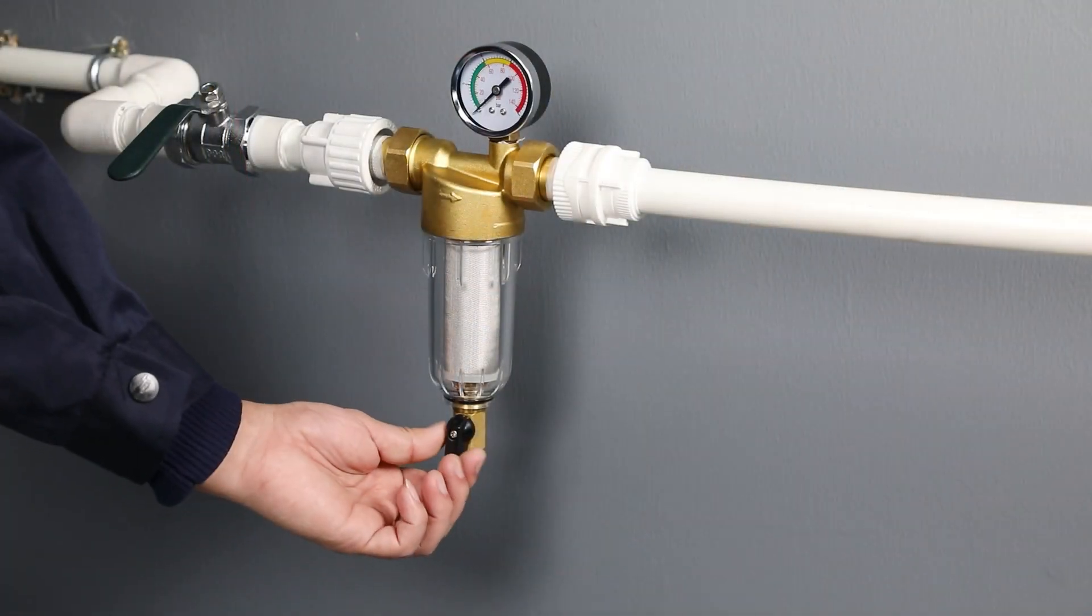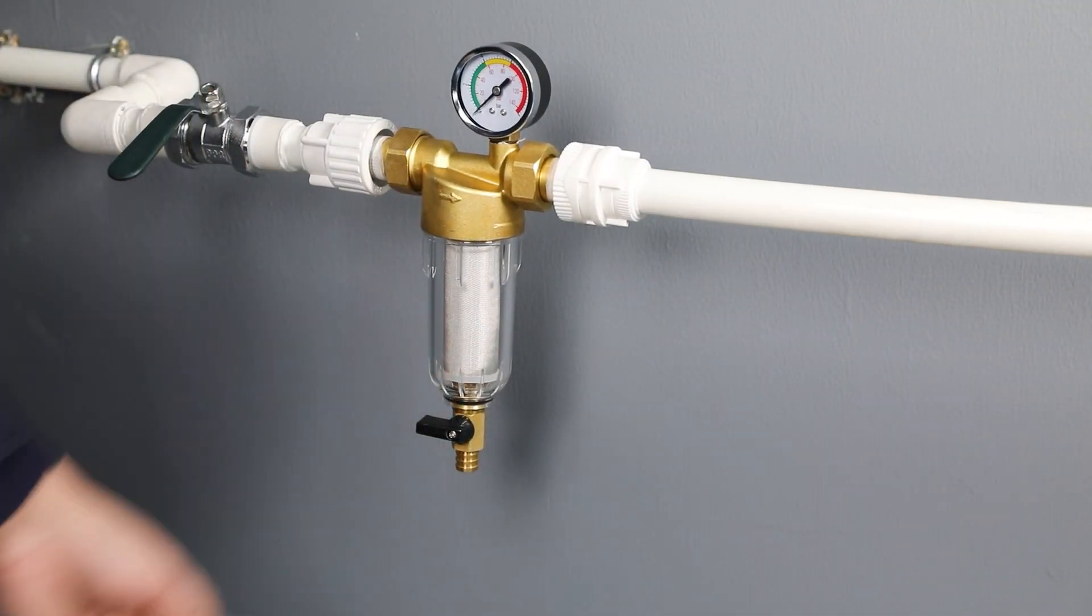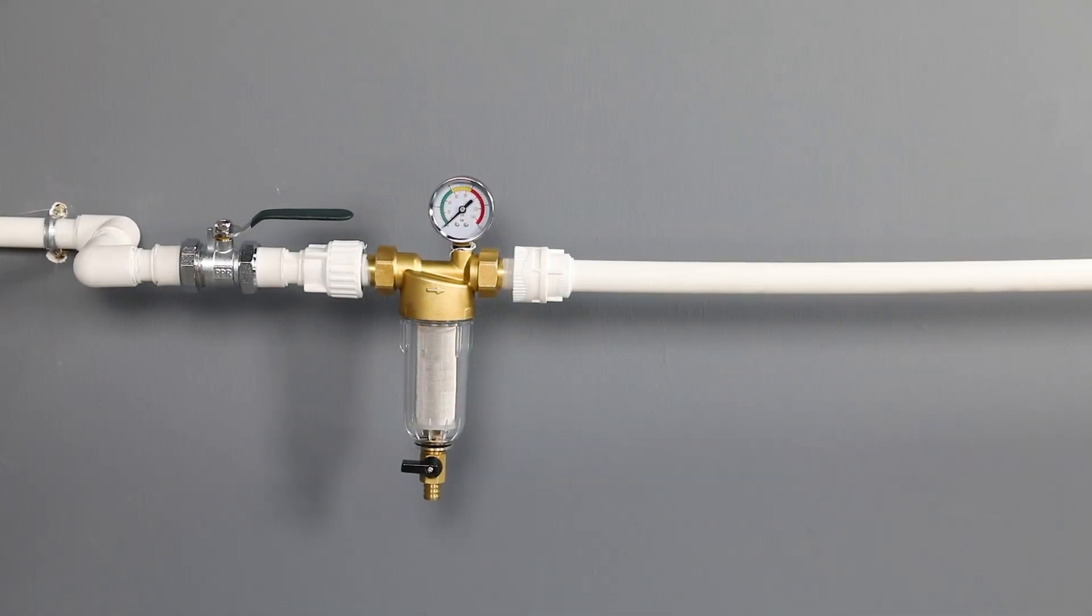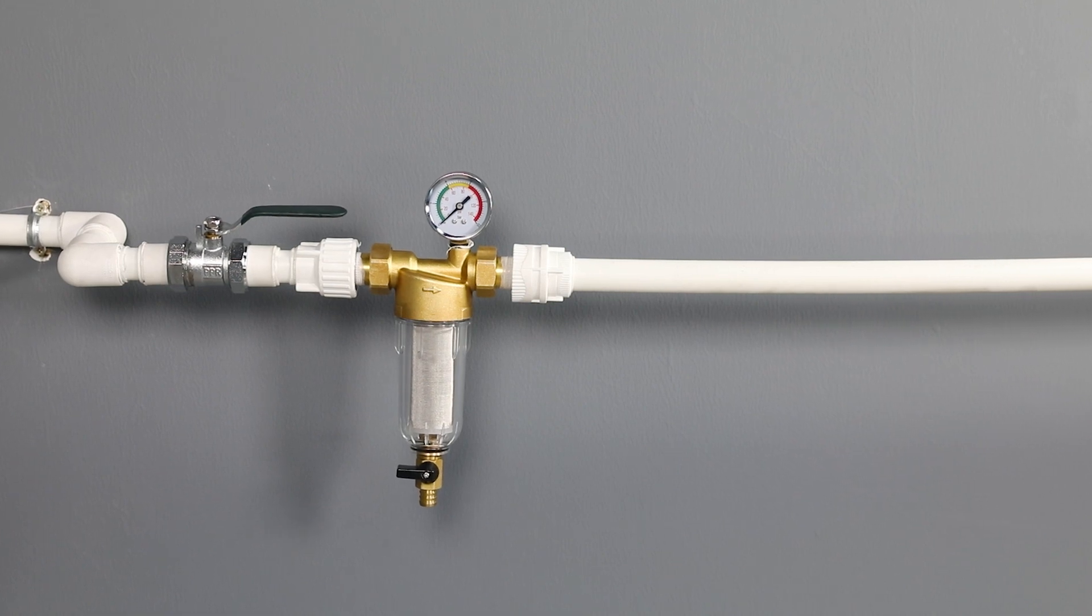5. Switch the drain valve to the vertical position to flush at least once a week. You could put a bucket under the drain hose to catch the drained water or connect a pipe to the ground.